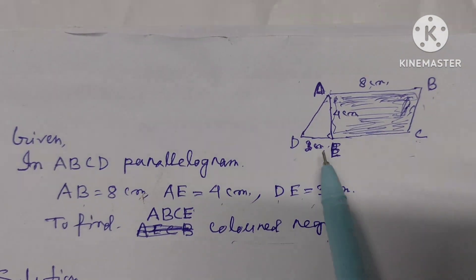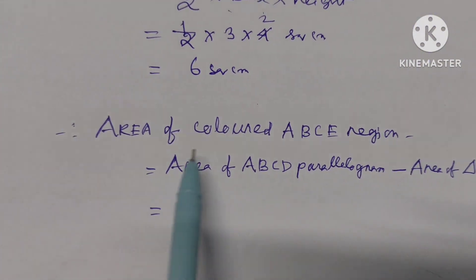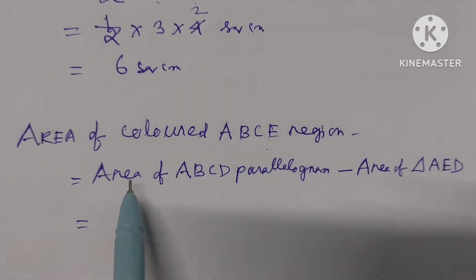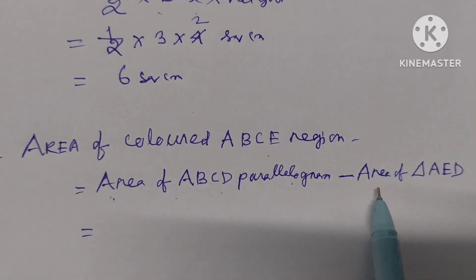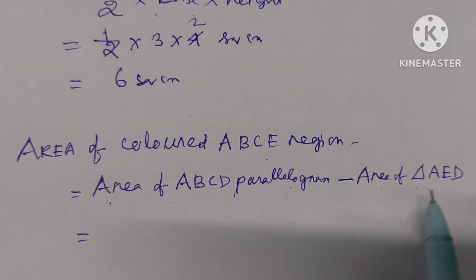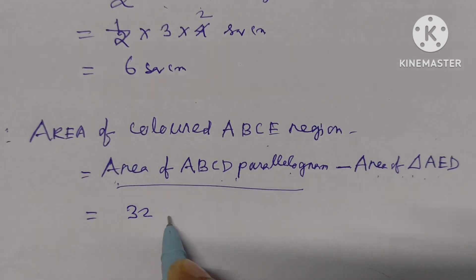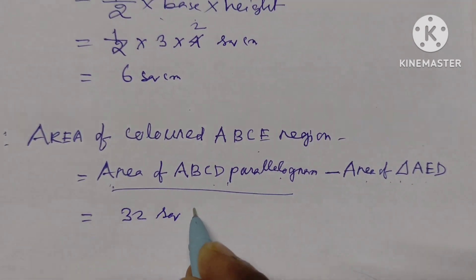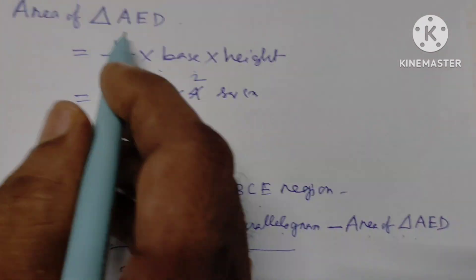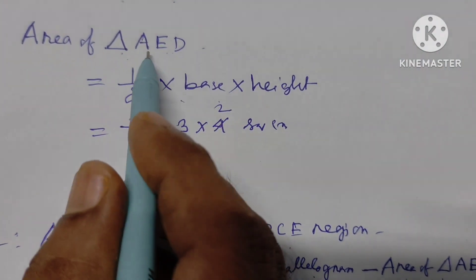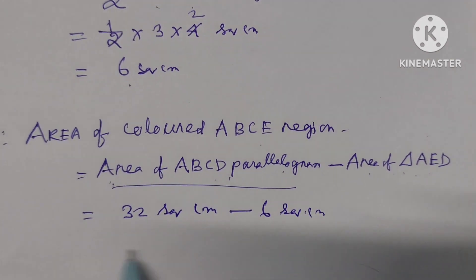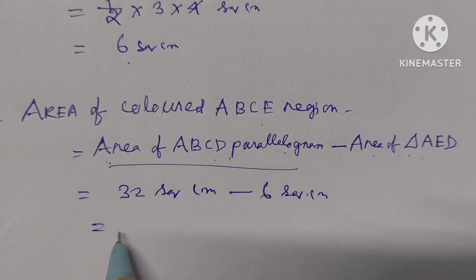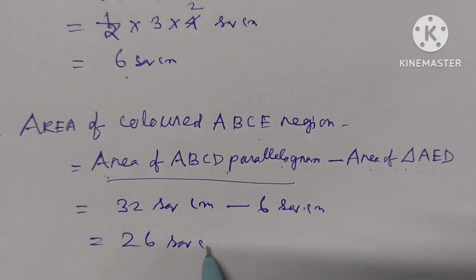Now the area of the colored region ABCE: we take the area of parallelogram ABCD and subtract the area of triangle AED. Area of ABCD = 32 square centimeters, minus area of triangle AED = 6 square centimeters. So 32 minus 6 equals 26 square centimeters.